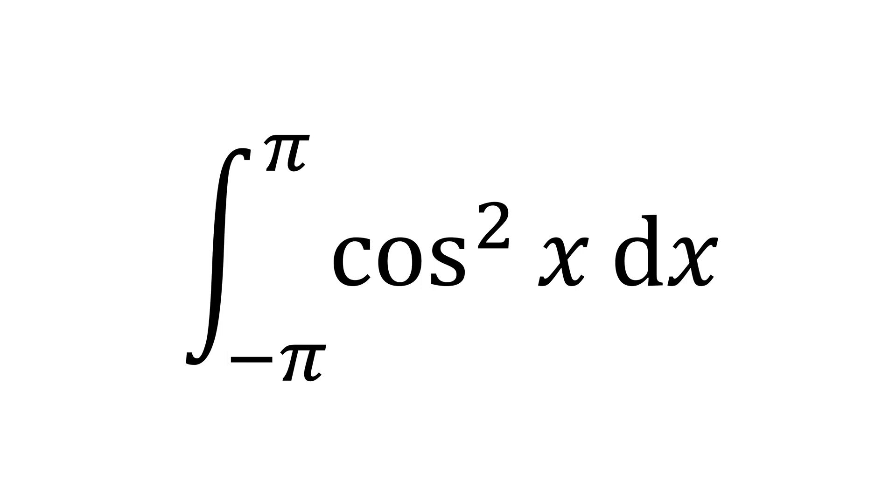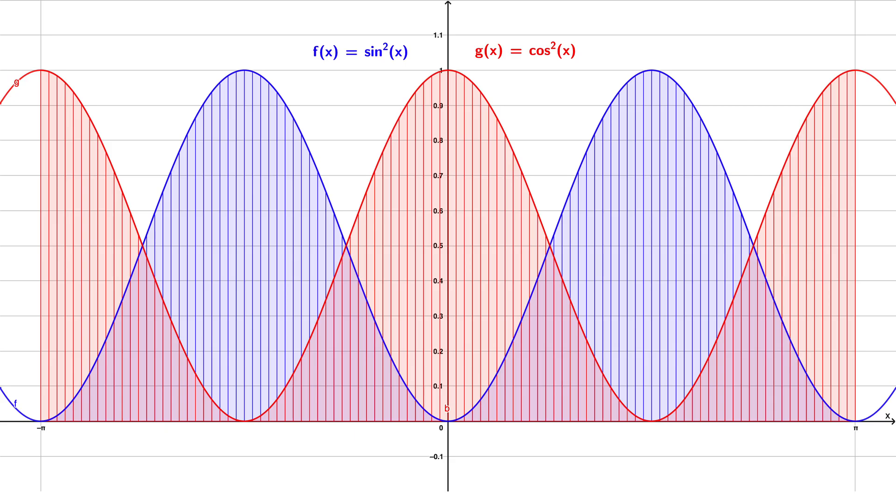We can apply cos square x in addition to sin square x. As you can see, these two functions are symmetric, but have different values at different x.